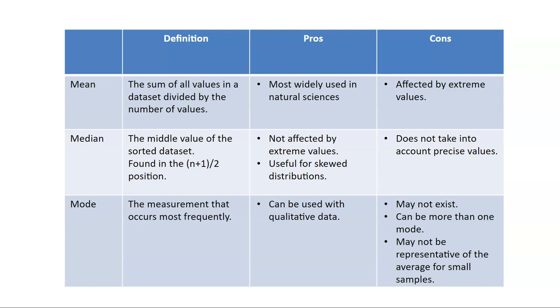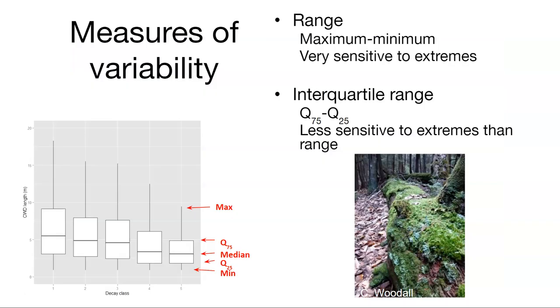The problem with the mode is that it may not exist. There may not be multiple measurements that occur more than once. There could be more than one mode. That is to say you could have a bimodal or a trimodal distribution. And it may not be representative for the entire data set if you have a small number of samples.